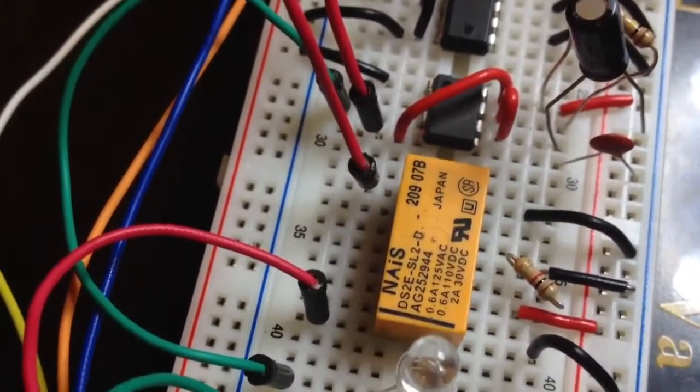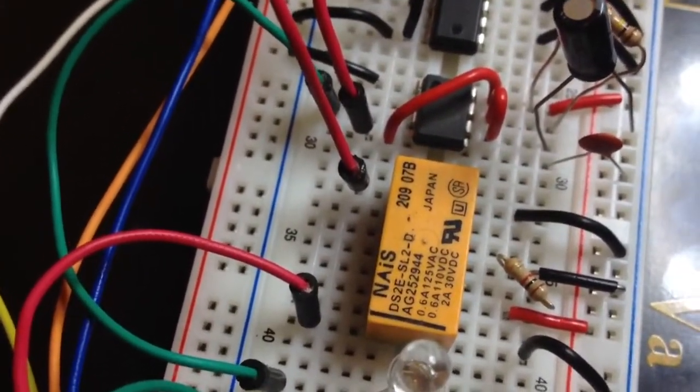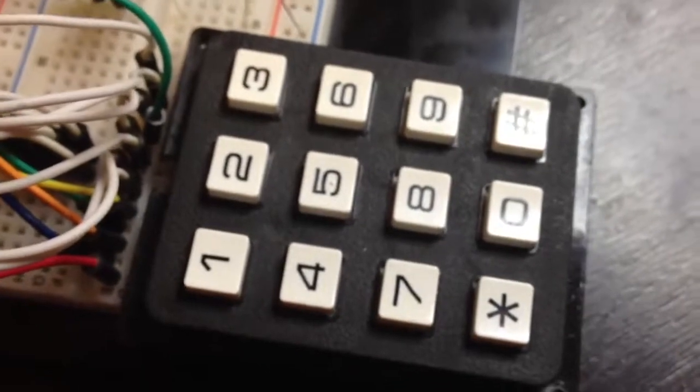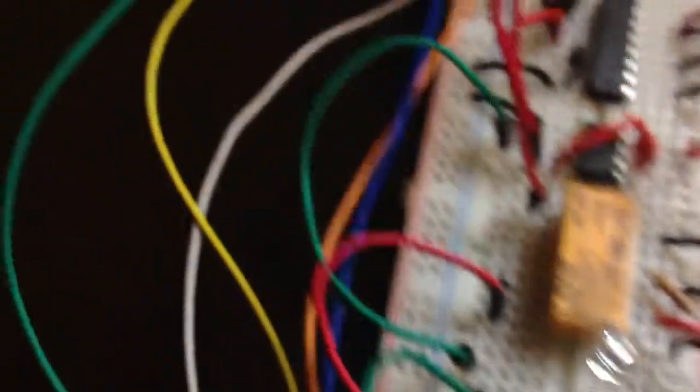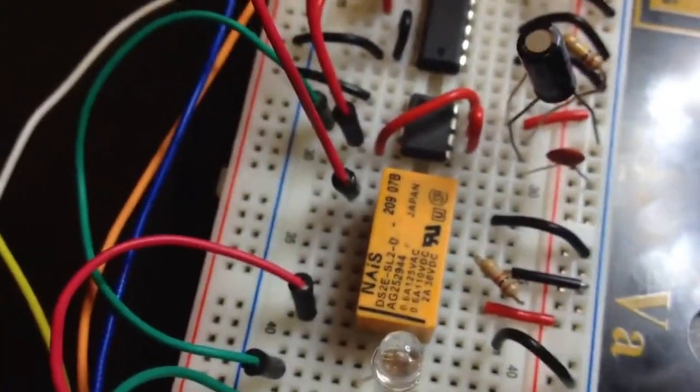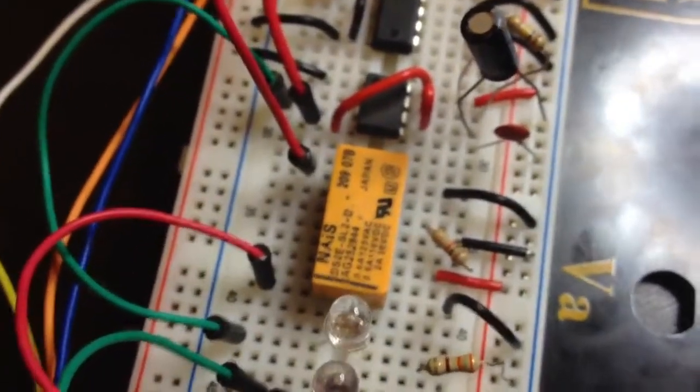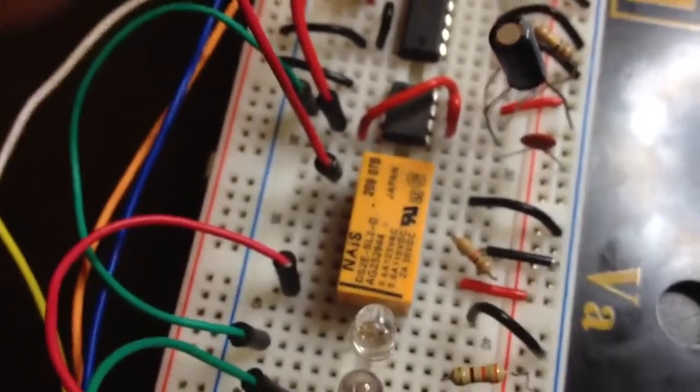The relay that is supposed to turn things on and off as a result of inputting the correct code into the keypad here. So that's kind of a security lock and that should turn this on, but both the relays that I got are dead on arrival. I've also seen that others on the make site have had that problem.